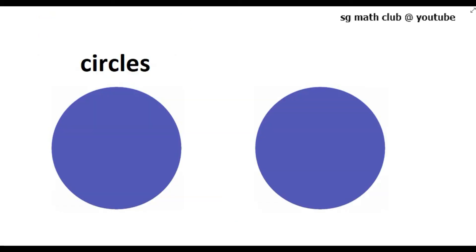Now, congruence of some geometrical figures. When will you say two circles are congruent? Two circles are congruent if they are of the same radius. For example, if the radius of both circles is 4 cm, we can say these two circles are congruent — they are of the same shape as well as the same size, meaning their radii are equal.